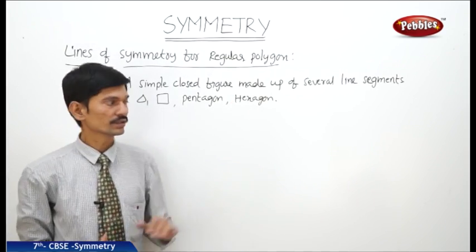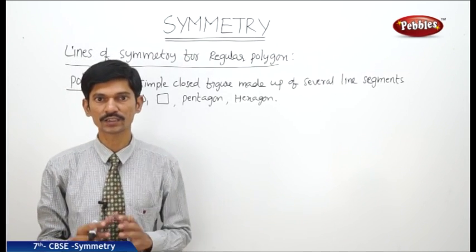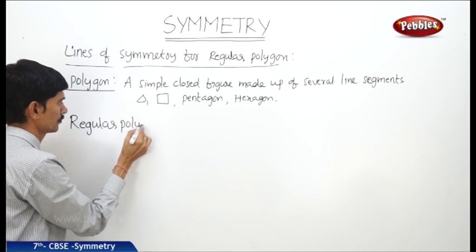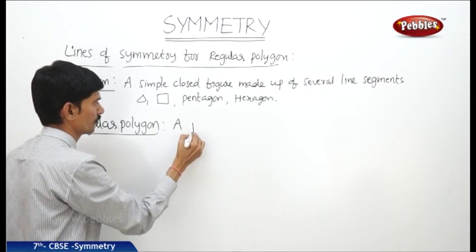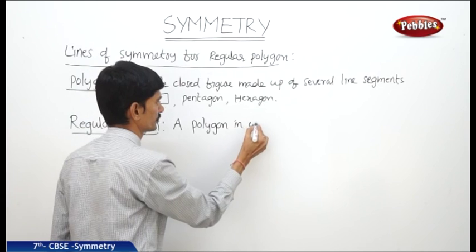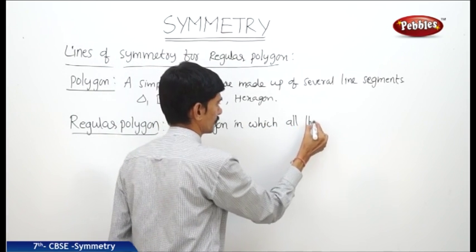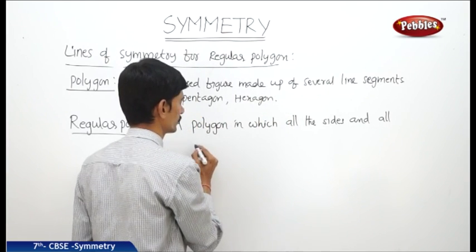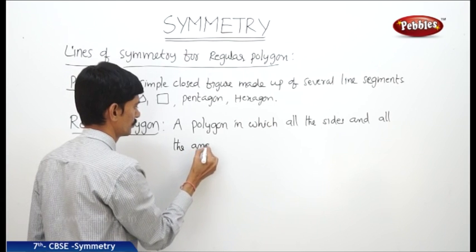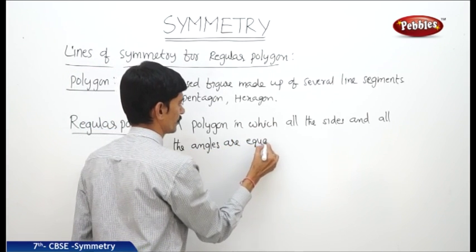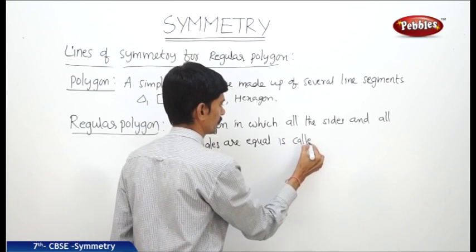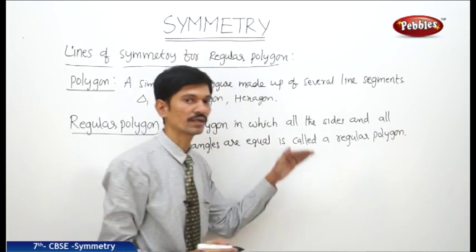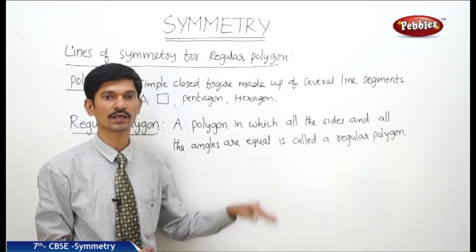Now what is a regular polygon? A polygon in which all the sides and all the angles are equal is said to be a regular polygon. So when a polygon has all its sides and all its angles equal, it is called a regular polygon.